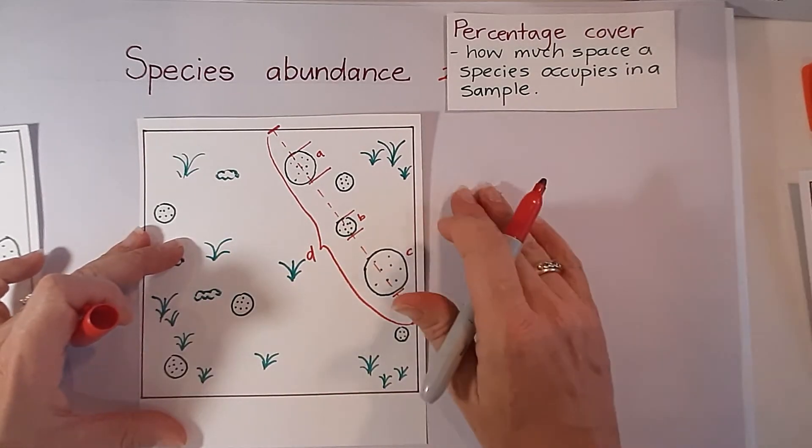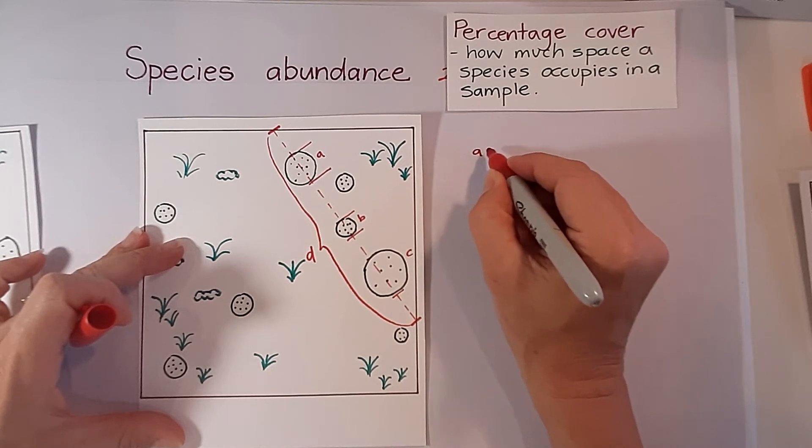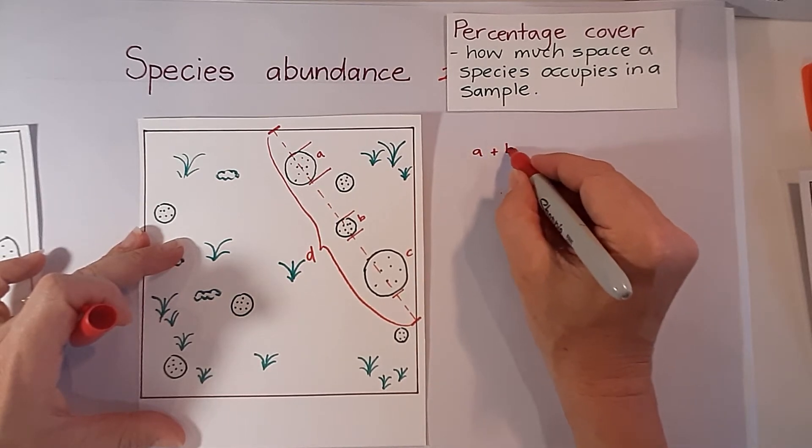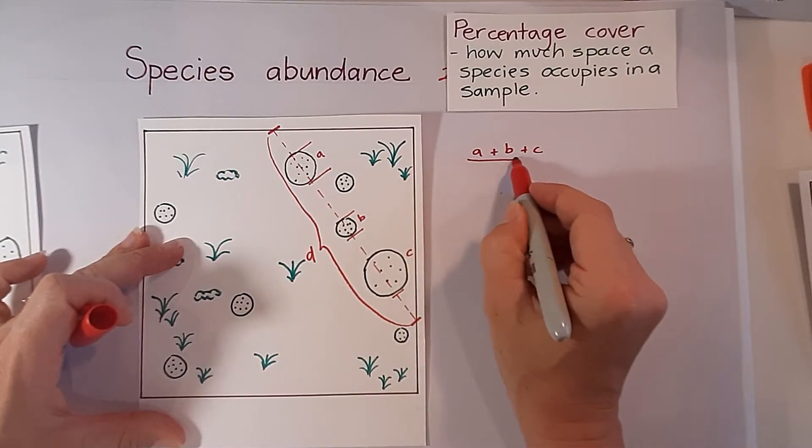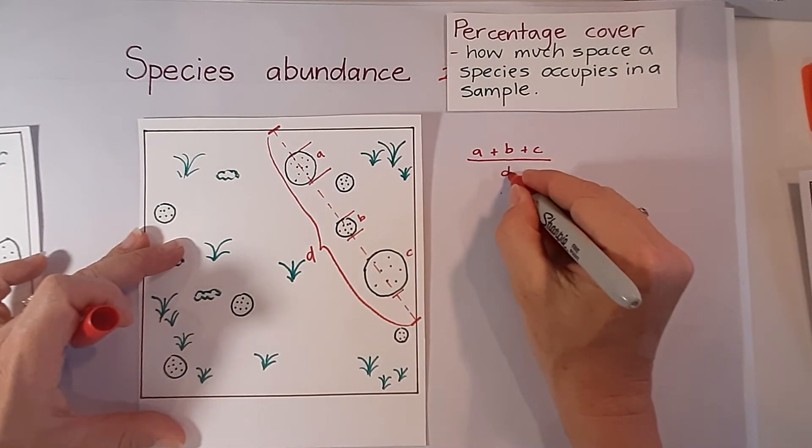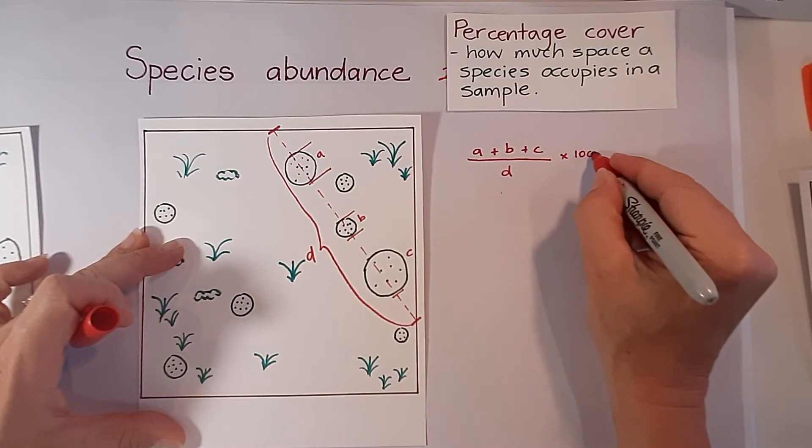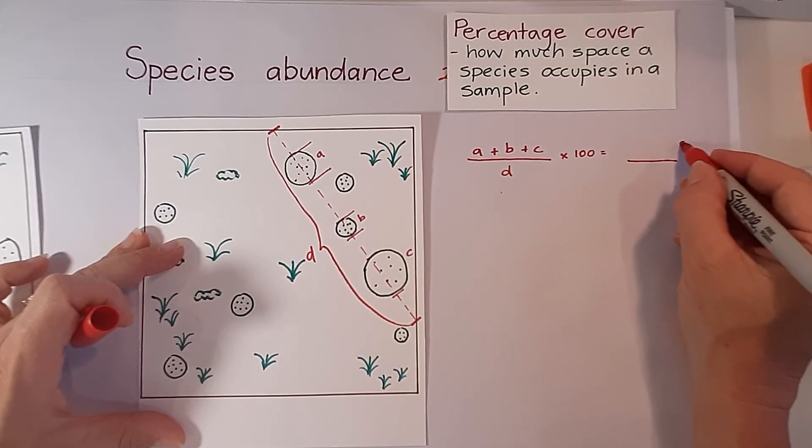So how do we work out percentage cover? Well we would add up a plus b plus c and divide it over the total distance covered. So in this case d, and then we would multiply that by 100 to give the percentage cover.